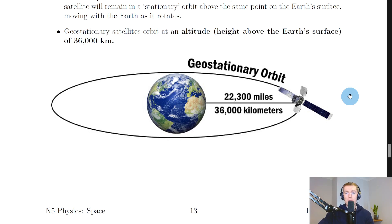To conclude, there are two key things to remember about geostationary satellites. First, they have an orbital period of 24 hours — they go around the earth once in 24 hours. Second, they orbit at an altitude of 36,000 kilometers, which is the height above the earth's surface.